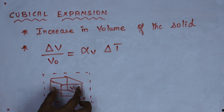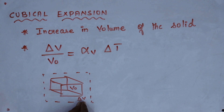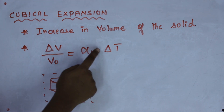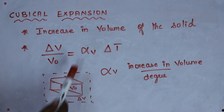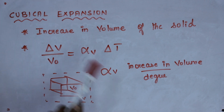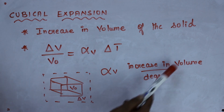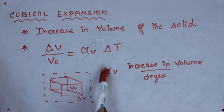Here I have considered a solid — after heating, the volume of the solid changes, and that change I am taking as delta V. Alpha V is the coefficient of cubical expansion. The coefficient of cubical expansion is the increase in volume per degree rise in temperature.